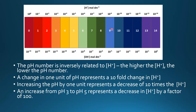If we have a change in pH number from pH 9 to pH 3, that represents a change in hydrogen ion concentration from 10 to the negative 9 to 10 to the negative 3. So that's an increase in hydrogen ion concentration by a factor of 1 million.